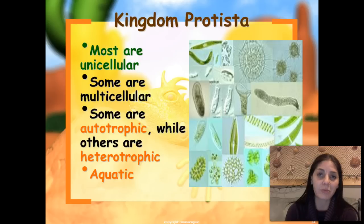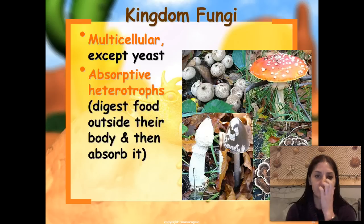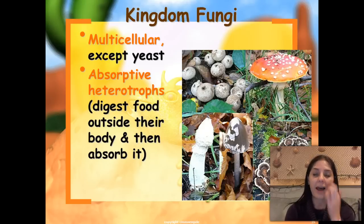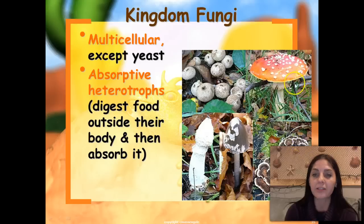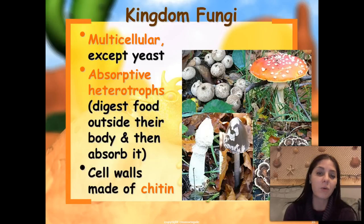Kingdom Fungi: fungi are multicellular, except for yeast, which is unicellular. They are absorptive heterotrophs, which means they digest their food outside of their body and then absorb it. As you can see here, we have bracket fungus and mushrooms — those are all examples of fungi. They are eukaryotic, and they have cell walls made of chitin.